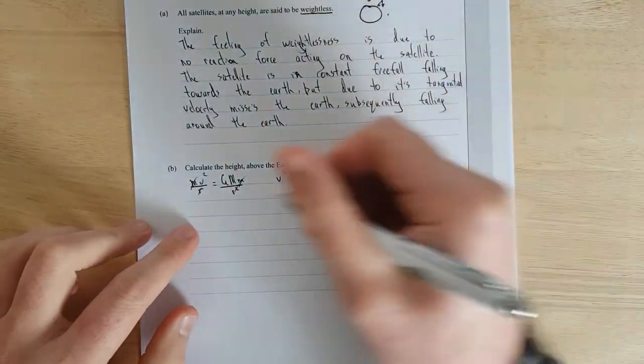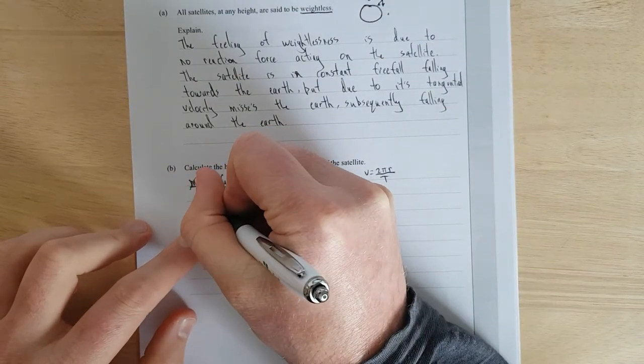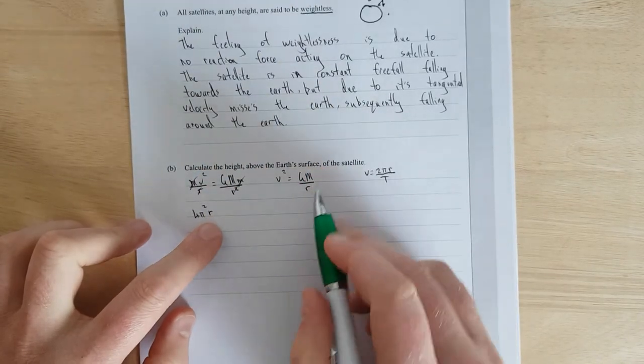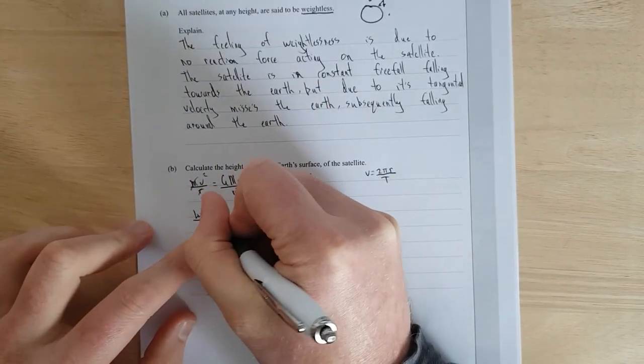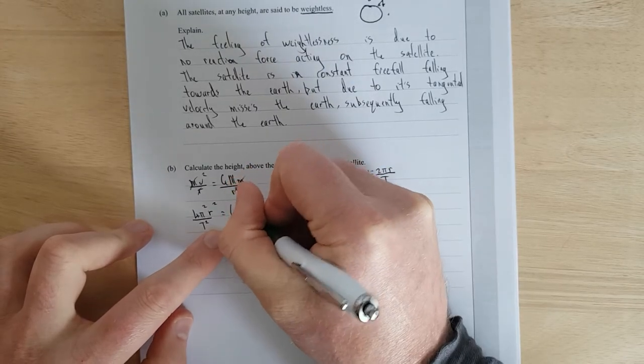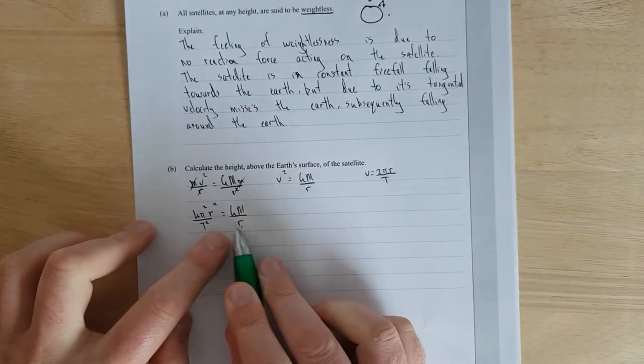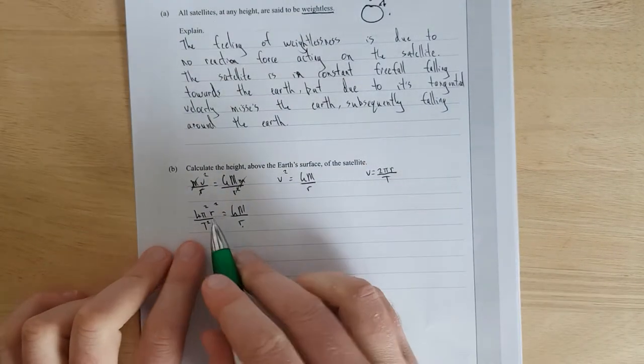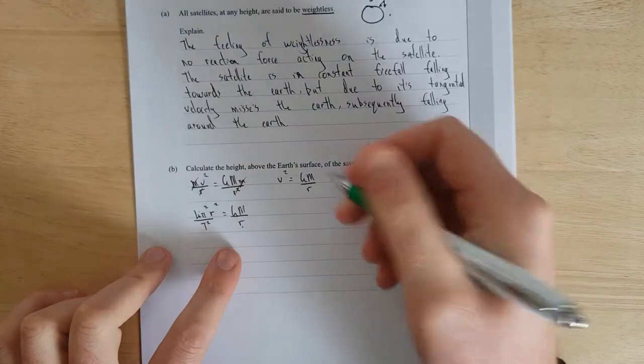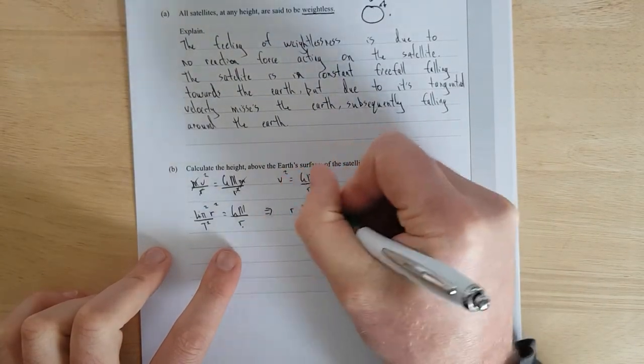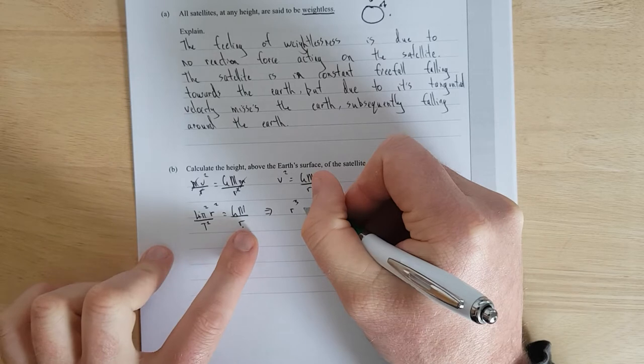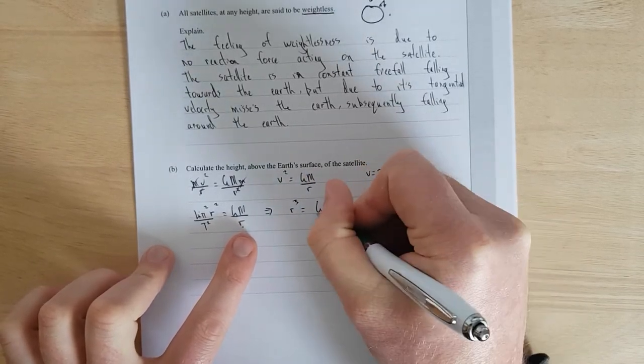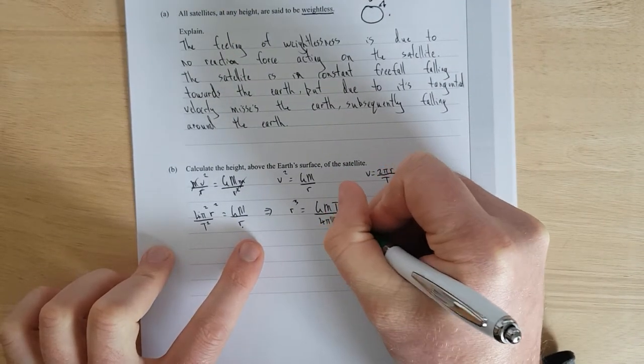So we're going to have 2 squared is 4. π² r would have been r. Yeah, it would have been squared. I'll put squared over t² equals big G, big M over r. I'm going to move that r up. And then I'm going to move that t² across to that side. And then I'll move the 4π² under. So I'm going to have r³ is equal to big G, big M, t² over 4π².